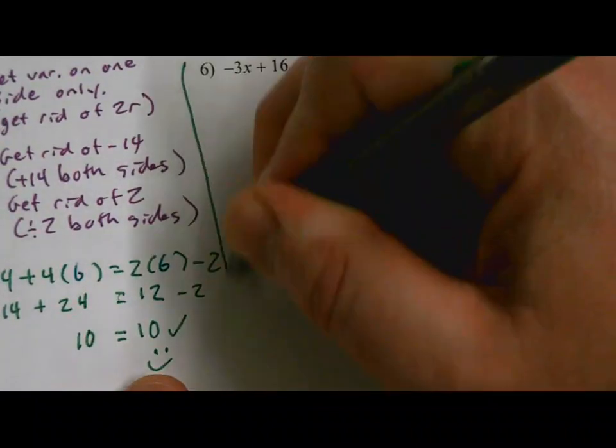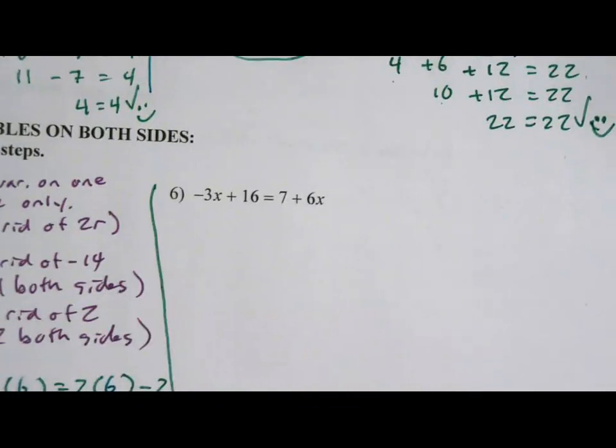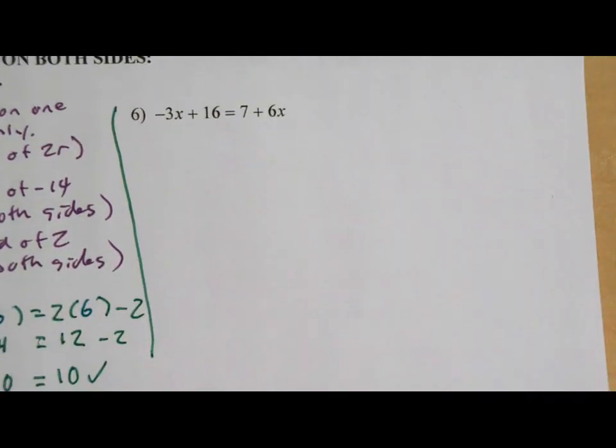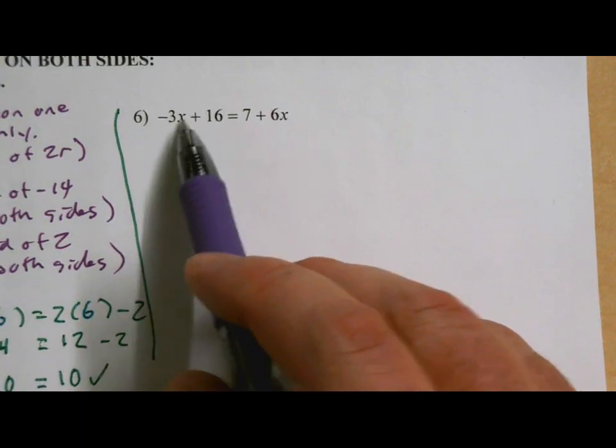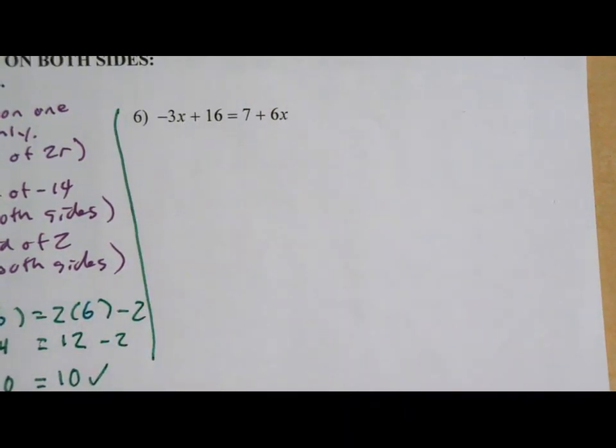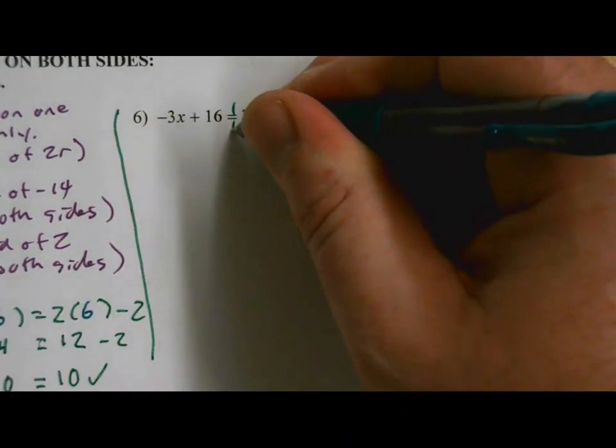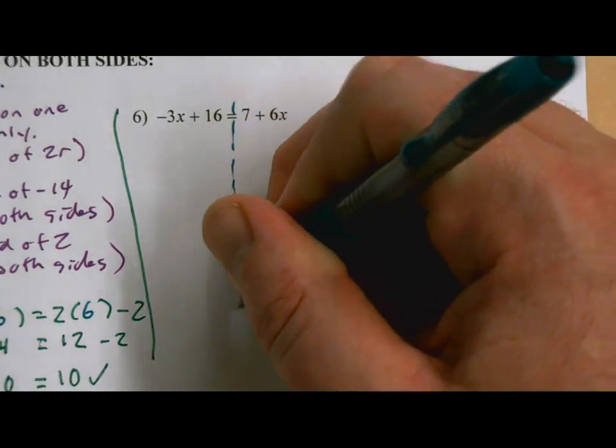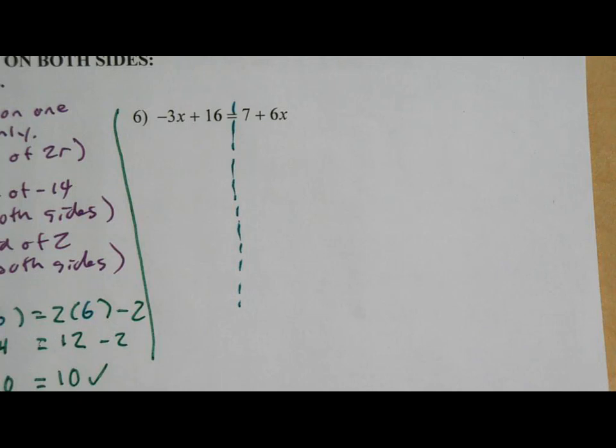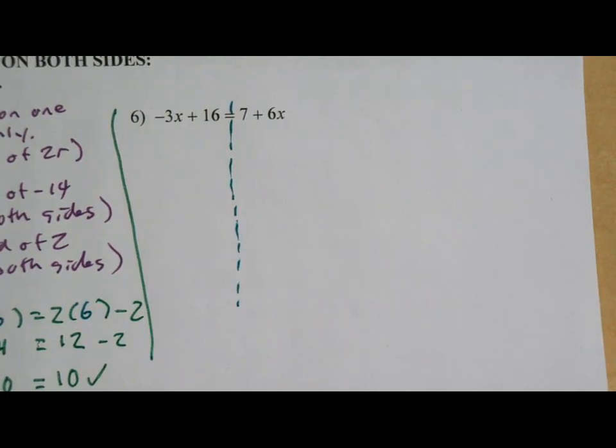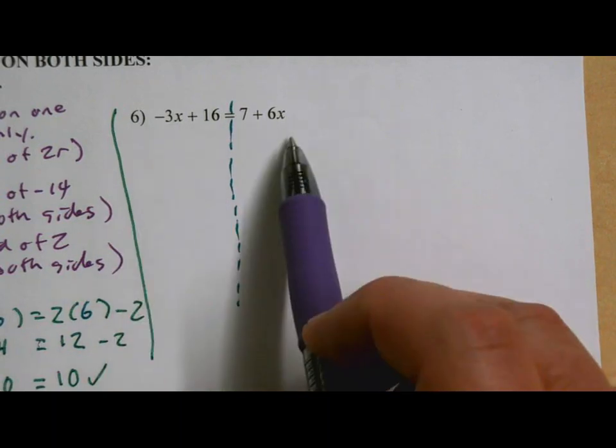Alright. Moving on to the next one here. This equation also has a variable on both sides. It has a negative 3x over here and there's a 6x over here. Before I forget, let's go ahead and draw that line. So we can't have a variable on both sides of the equation. We need to get rid of one or the other. So should I get rid of the negative 3x or the 6x?